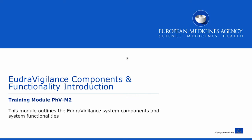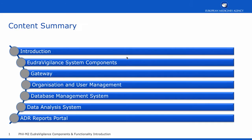Welcome to the Pharmacovigilance training module M2. In this training module we will be looking at the EudraVigilance system components and system functionalities, comprising of the EudraVigilance gateway, the organisation and user management system, the EudraVigilance database management system, the data analysis system, and the ADR reports portal.